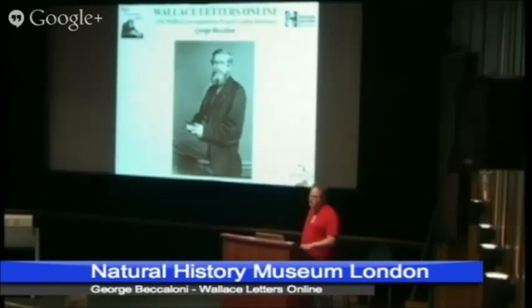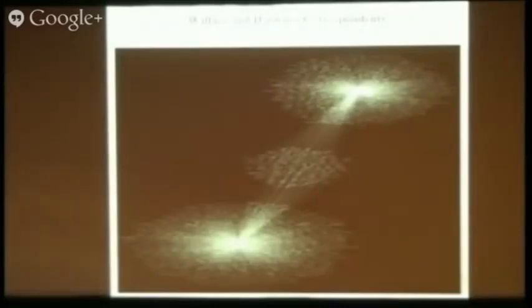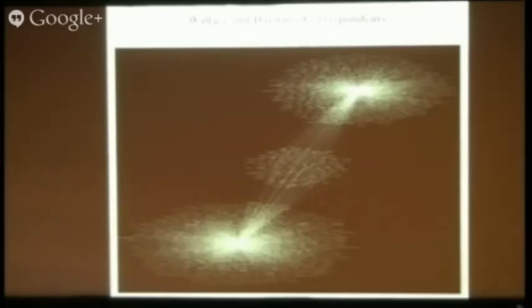It is interesting to compare our project to the famous Darwin Correspondence Project based in Cambridge, which has been running since the mid-1970s. This diagram shows Darwin and Wallace's known correspondence. Darwin, in the lower left, corresponded with about 1,900 people, whereas Wallace, in the upper right corner, is known to have corresponded with about 1,400 people. The names in the middle show people which both men corresponded with, so a fairly small percentage are shared.